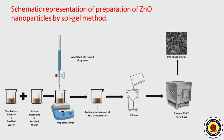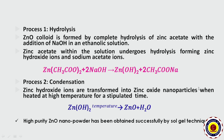This is the schematic representation of the preparation of zinc oxide nanoparticles, which we have already demonstrated. The following are the inferences from the experiment. It comprises two processes. Process 1 — Hydrolysis: complete hydrolysis of zinc acetate takes place with the addition of sodium hydroxide in an ethanolic solution, forming zinc hydroxide and sodium acetate ions. By condensation, zinc hydroxide is transformed into zinc oxide nanoparticles when heated at high temperature for a stipulated time. High purity nanopowder has been obtained successfully by Sol-Gel technique.